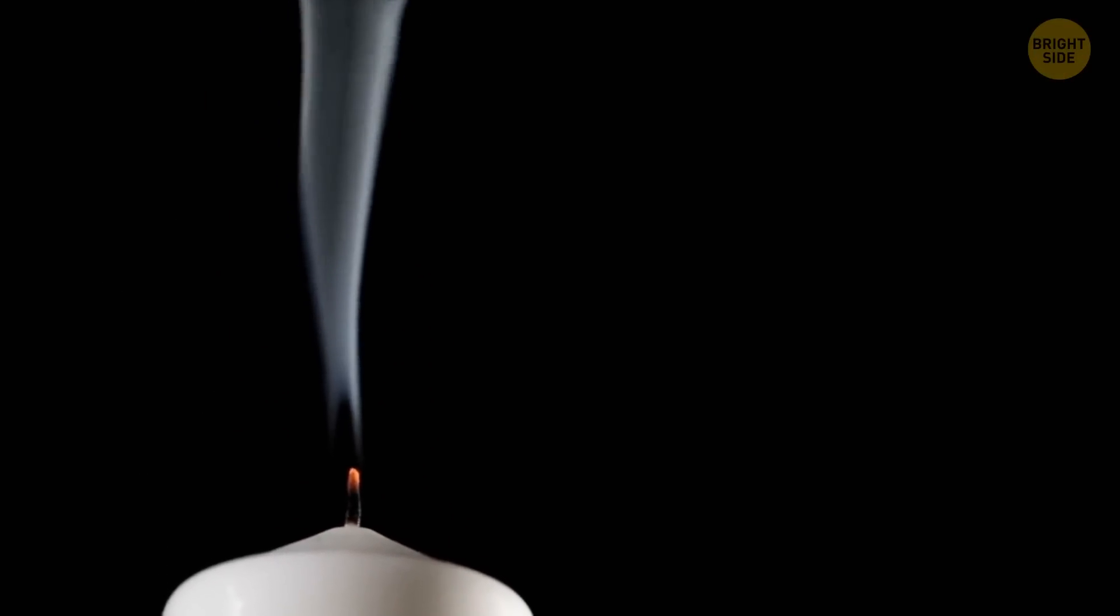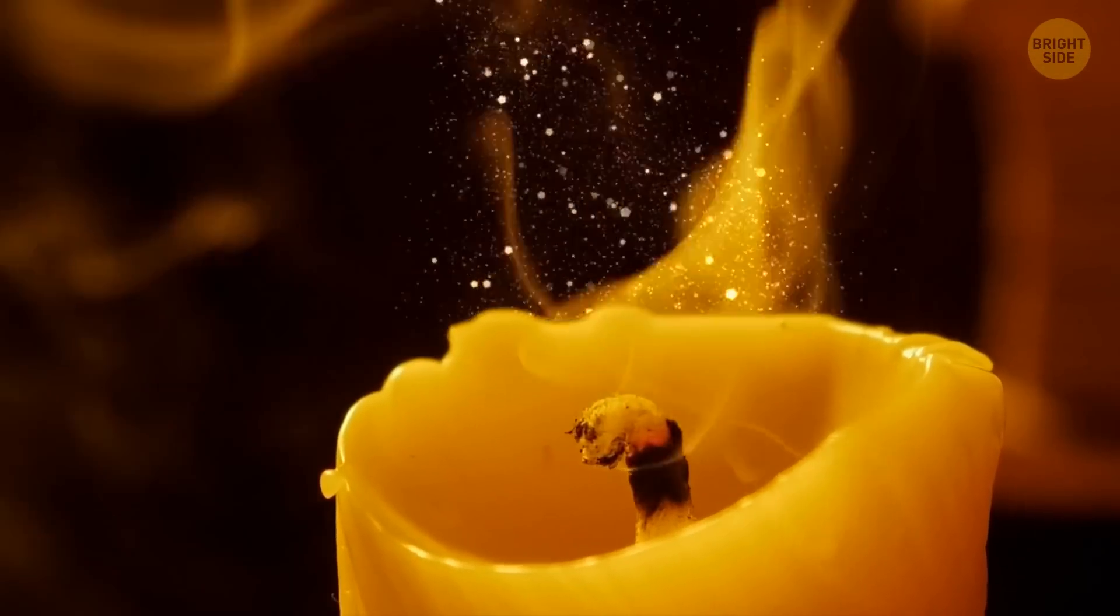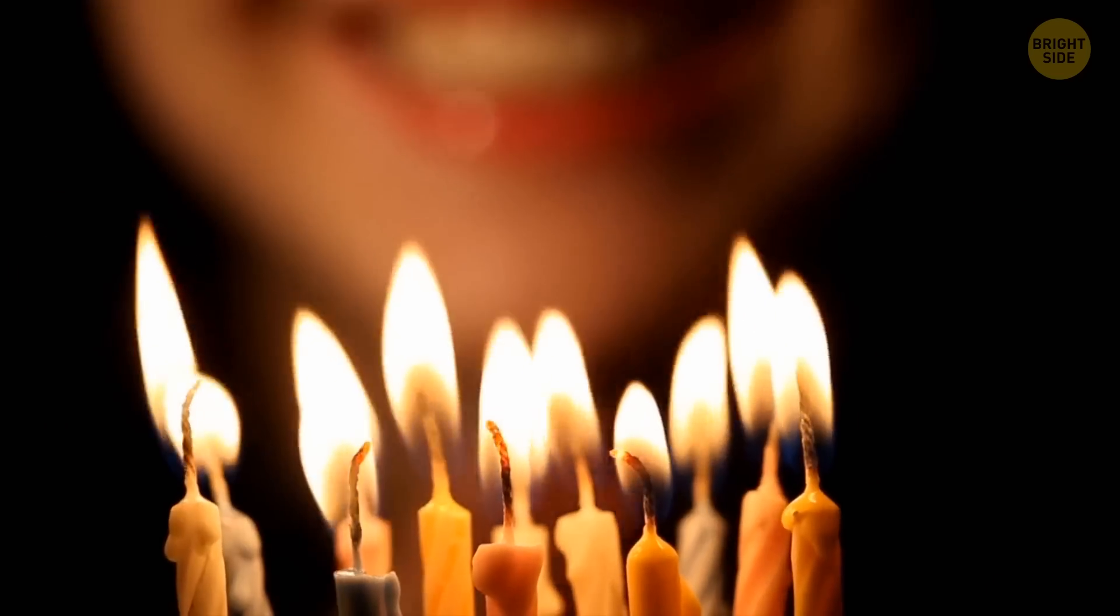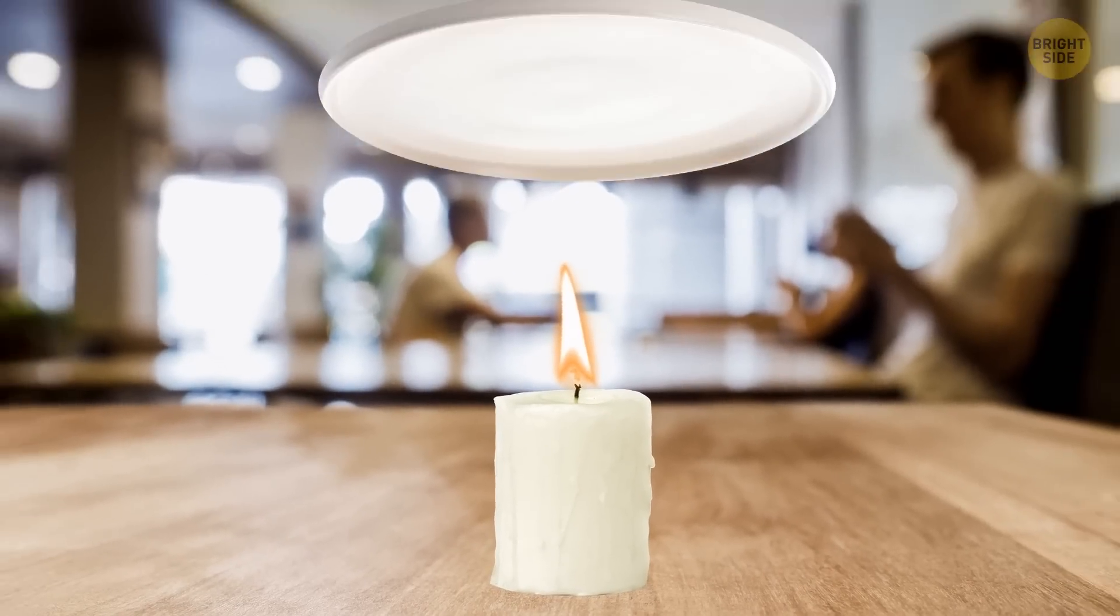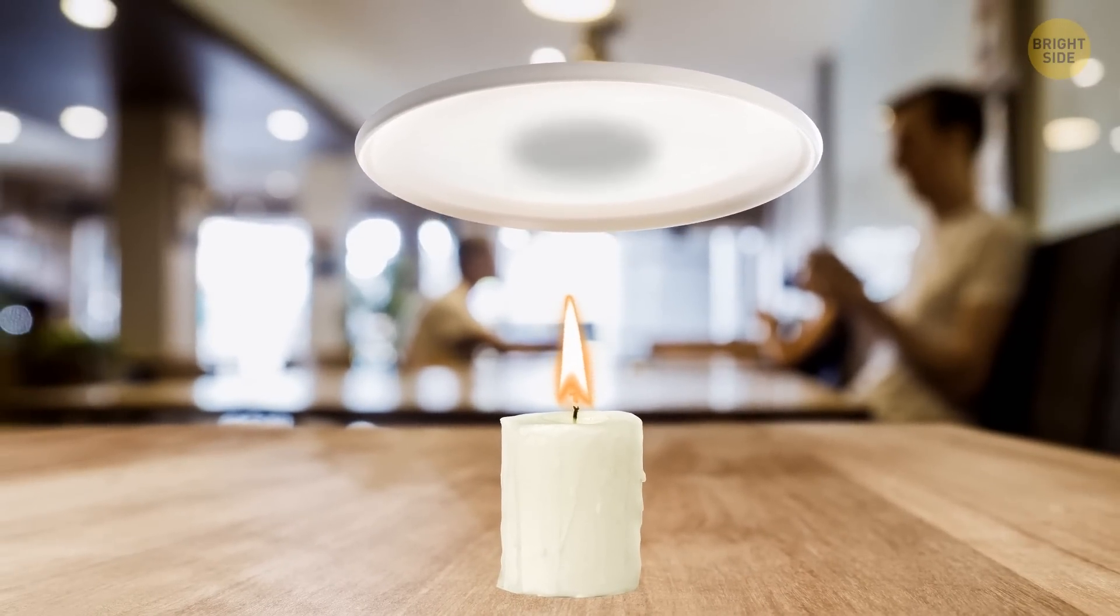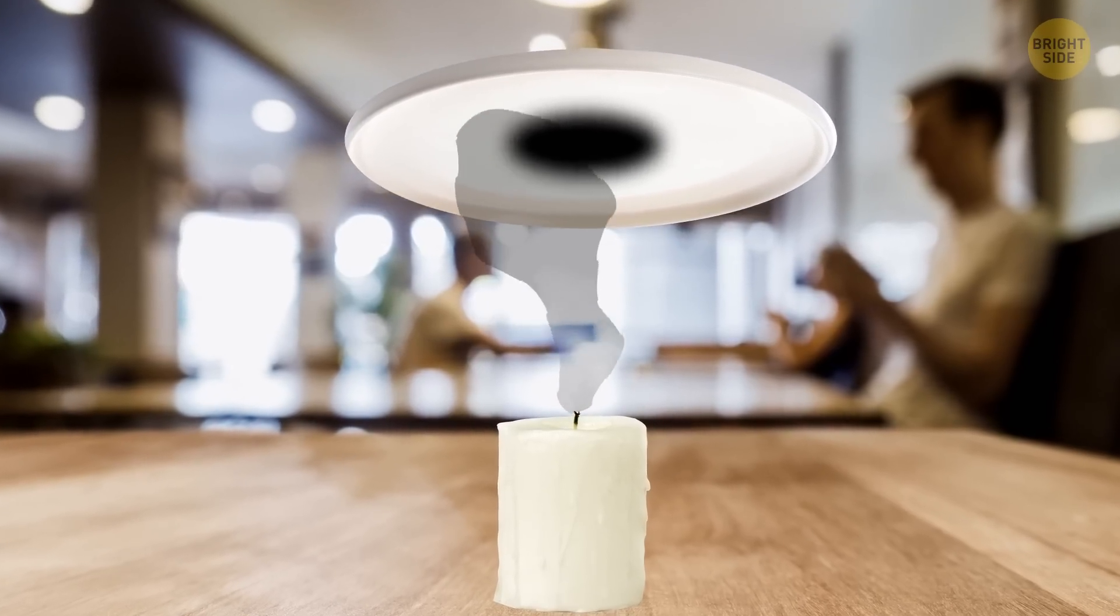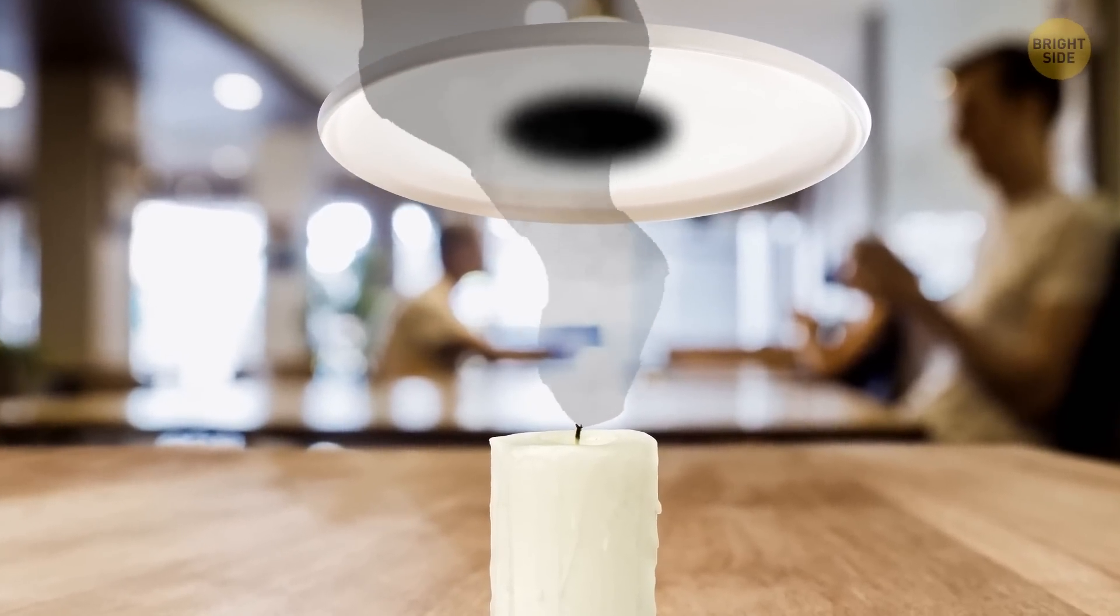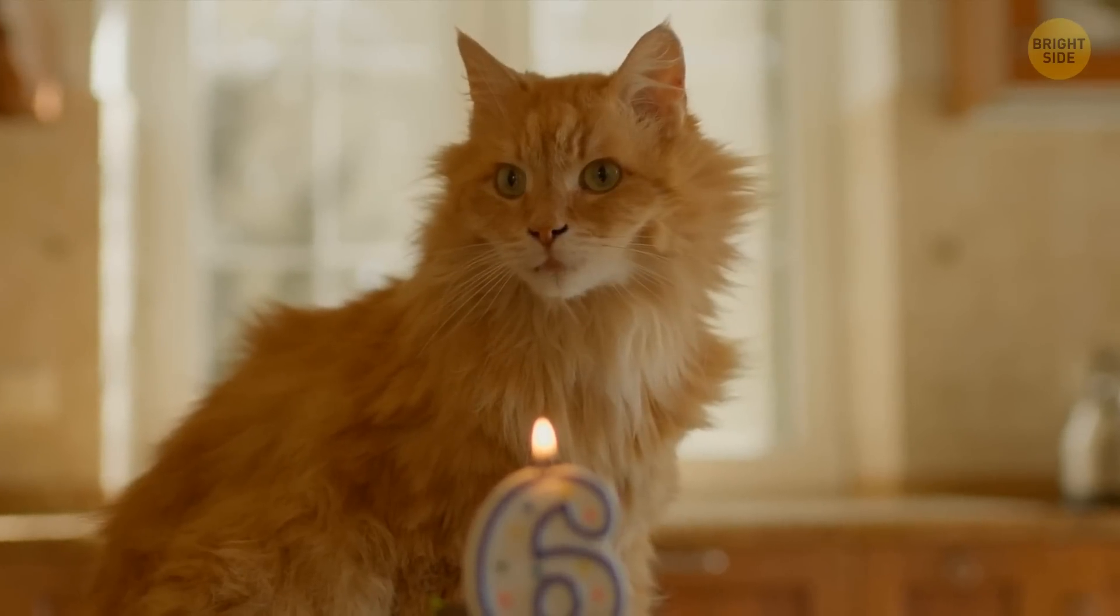How come a candle releases smoke only after you extinguish it? Smoke is actually a bunch of unburnt particles of carbon that get released when candle wax breaks down. When the candle is burning, most of the carbon turns into carbon dioxide, but some of it gets away. You can test it yourself. Put a plate above a candle flame and hold it there. The carbon will accumulate as a dark smear. When you extinguish the flame, the glowing wick still has enough heat to break up the molecules of wax, but it's not enough to burn all the carbon. So you see a trail of smoke until it all cools down.